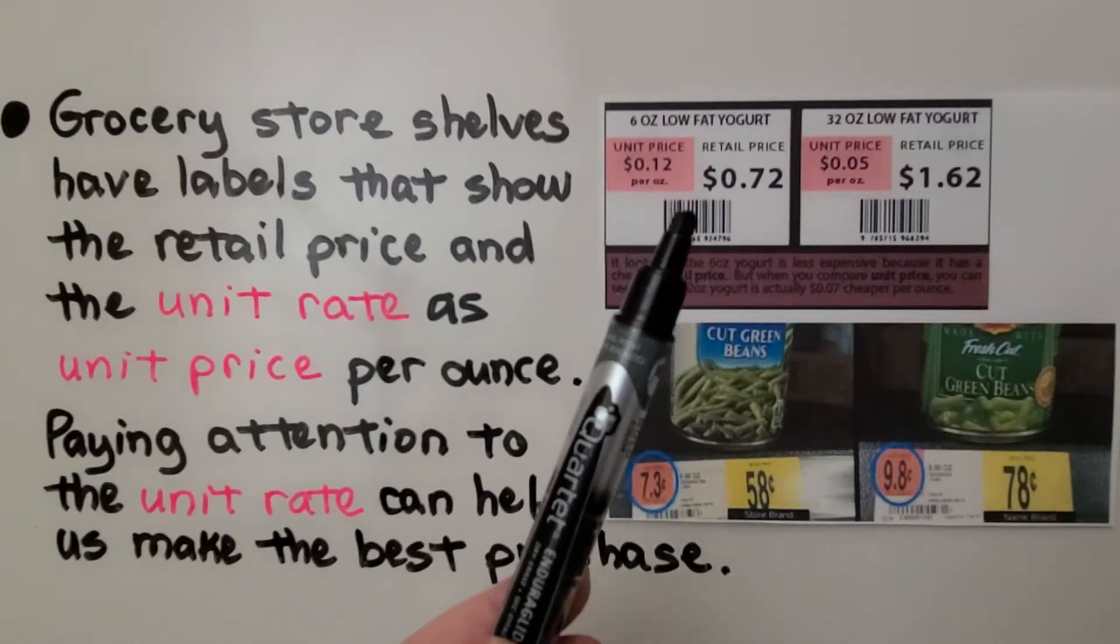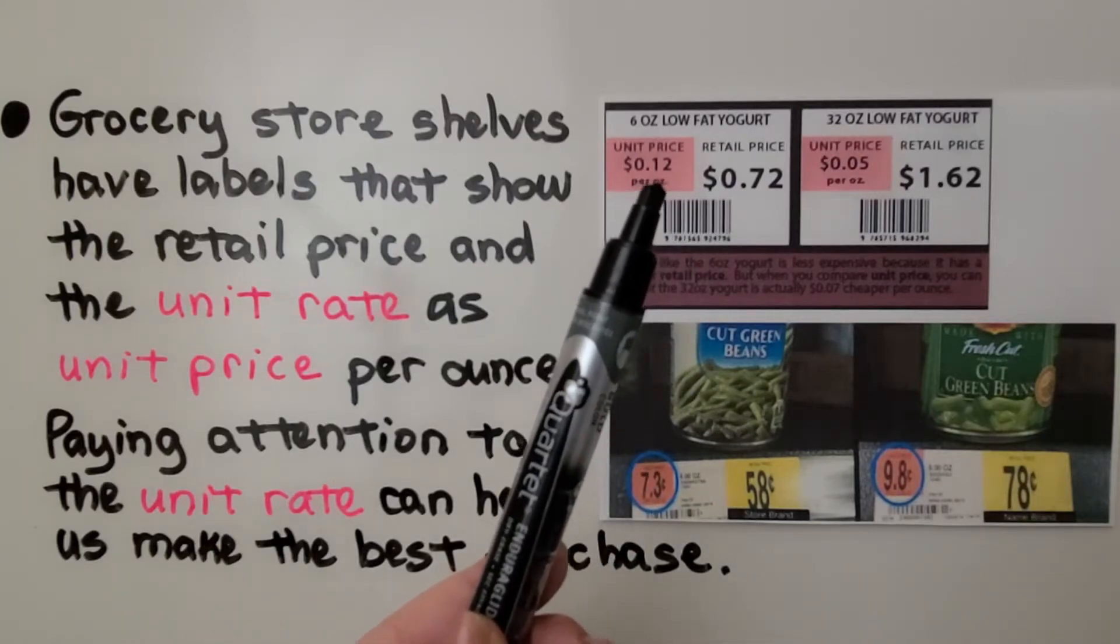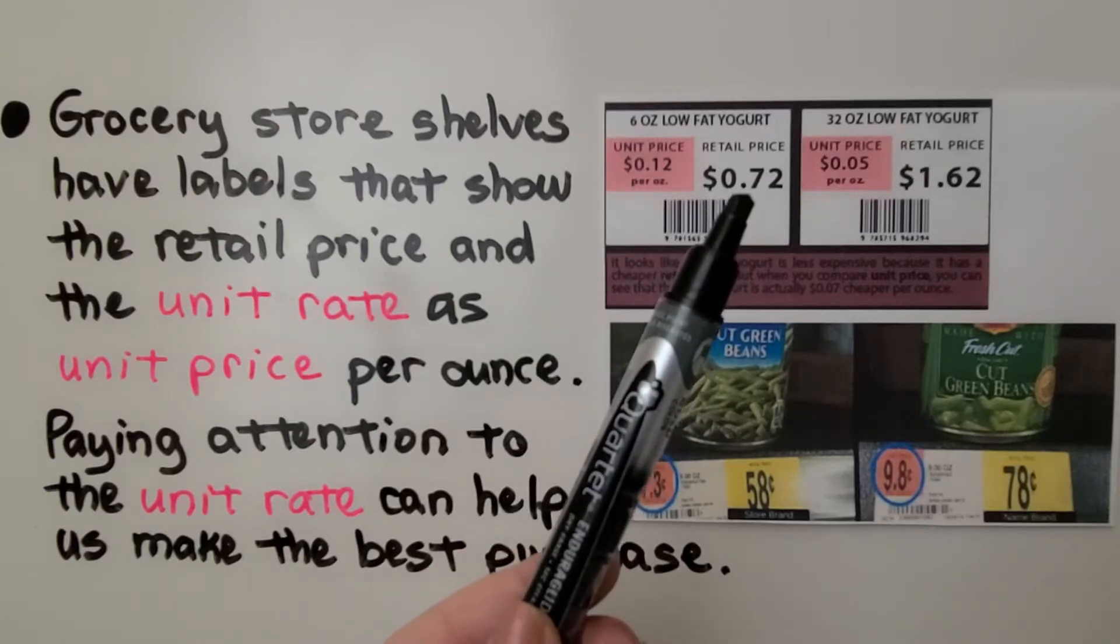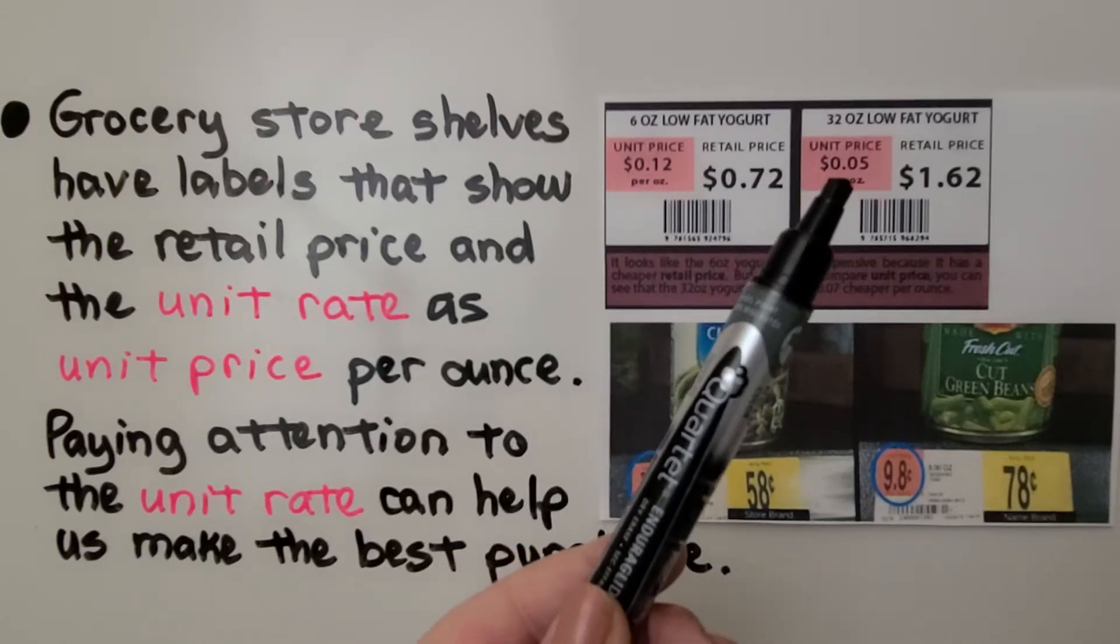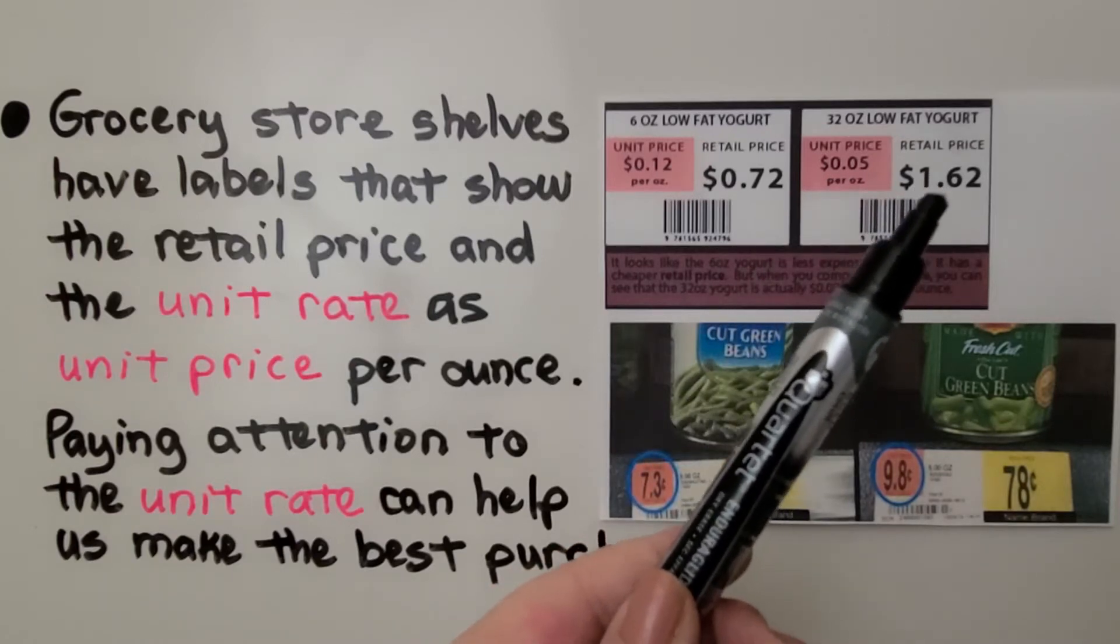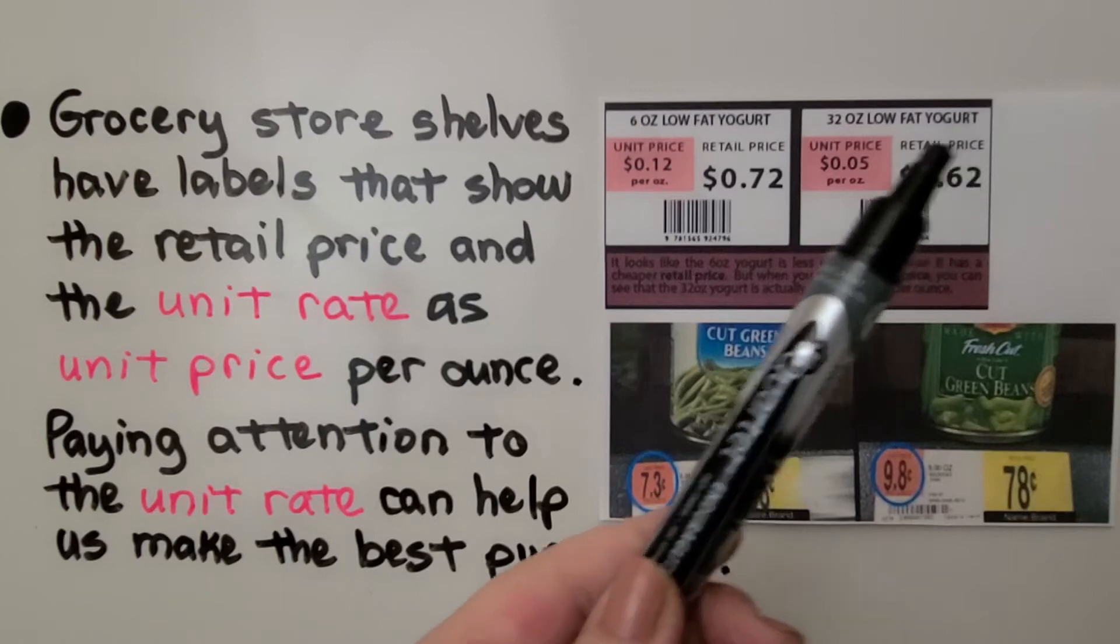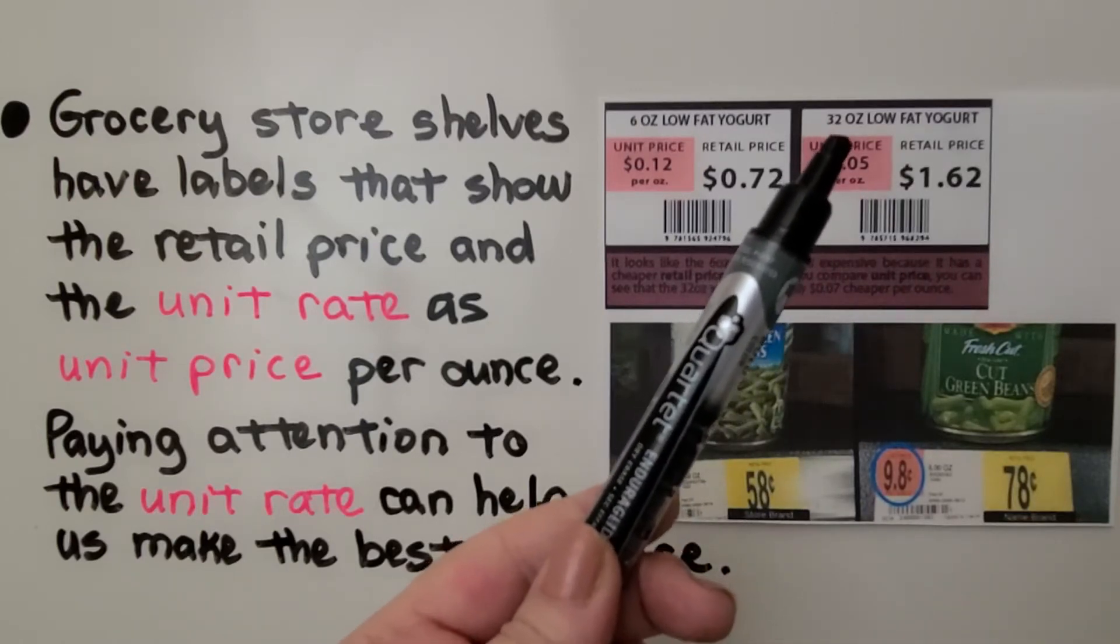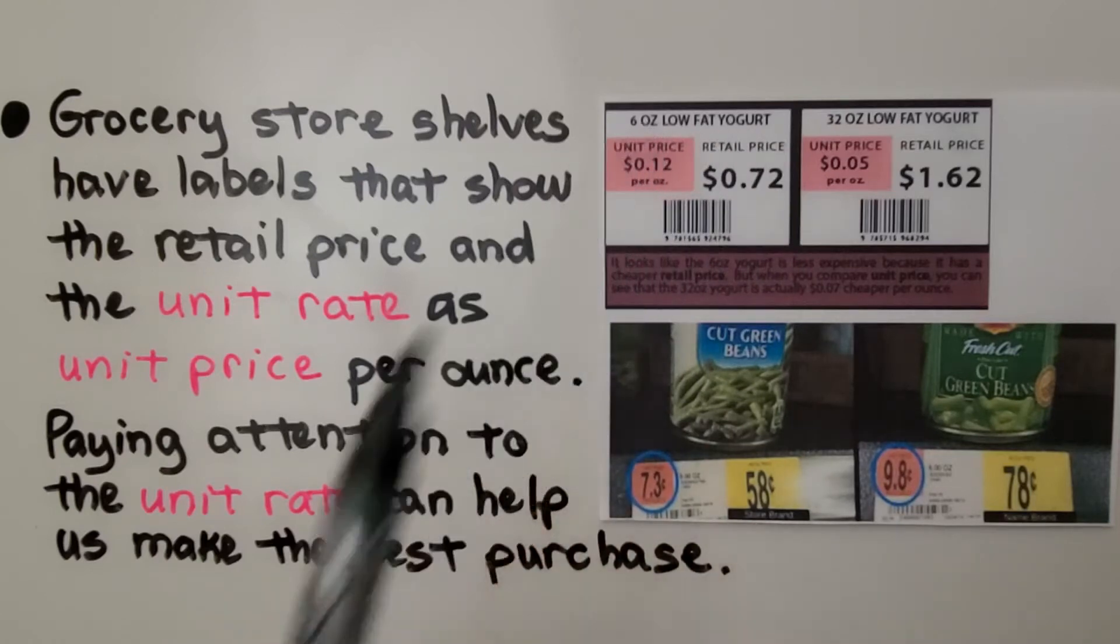If we look at this yogurt, this one is 12 cents per ounce, and you'll pay 72 cents for the container. This one's only 5 cents per ounce, and you'll pay $1.62 for the container. So this is a greater price than 72 cents, but look at the unit price. You're getting a 32 ounce container compared to a 6 ounce container.